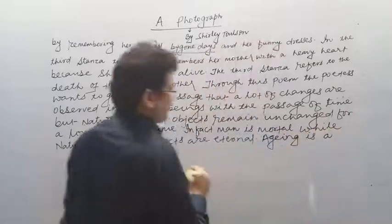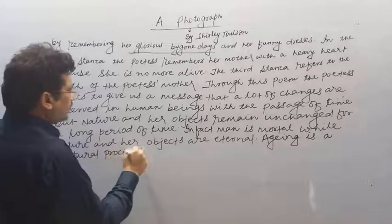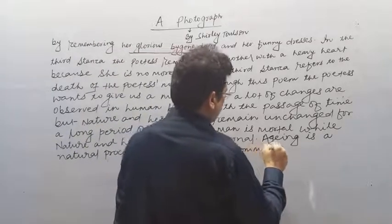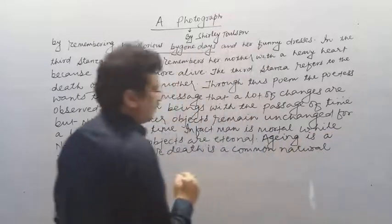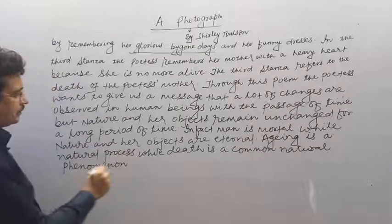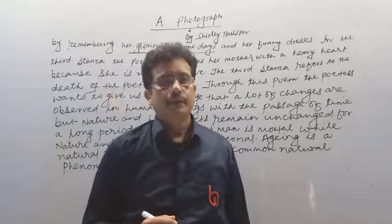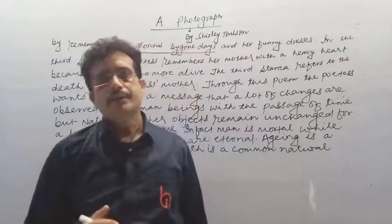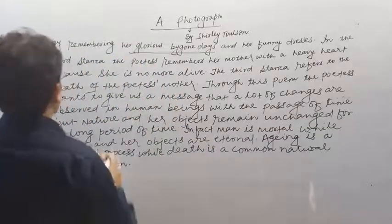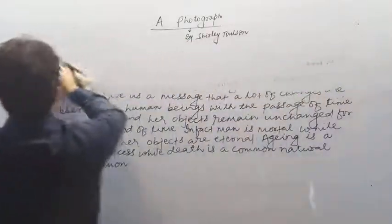Aging is a natural process — उम्र का बढ़ना एक स्वाभाविक प्राकृतिक घटना है। तो हम लोग अभी इस poem के central idea को देख रहे थे — केन्द्रीय भाव — कि कवित्री ने किस तरीके से तीन stanzas में three different phases का वर्णन की हैं।